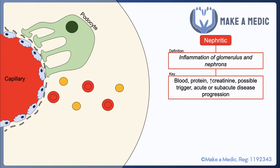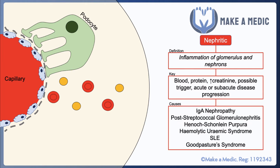There tend to be quite a few changes that occur within the glomerulus in nephritic syndrome because the capillary becomes quite leaky, the endothelial cells become damaged, and the basement membrane also starts to leak more protein and blood cells than it would otherwise.